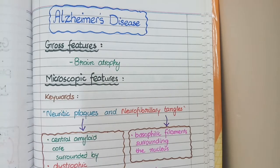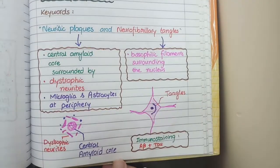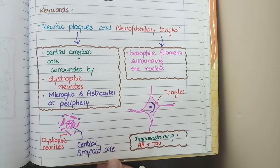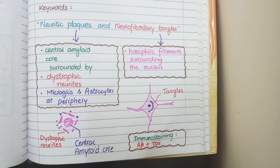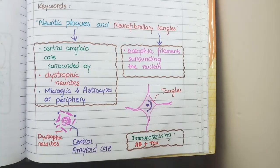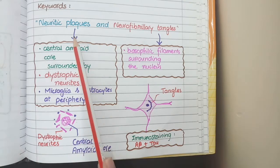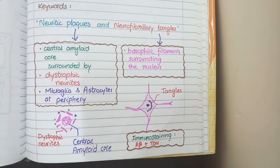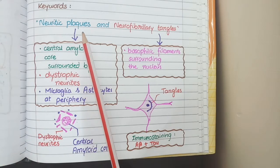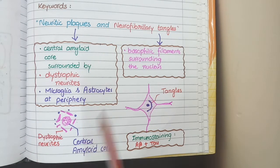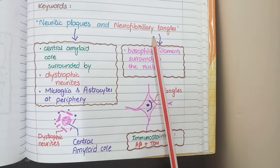For microscopic features, there are two specific histopathological lesions in Alzheimer's disease: neuritic plaques and neurofibrillary tangles. Neuritic plaques are extracellular lesions and neurofibrillary tangles are intracellular lesions. Neuritic plaques are composed of amyloid beta deposits and neurofibrillary tangles are made of tau protein.